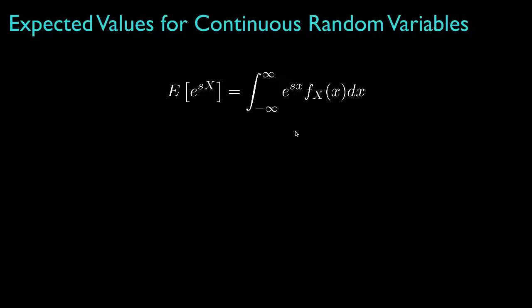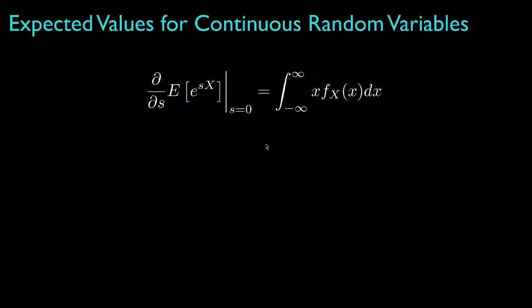To see this, let's differentiate both sides of this equation with respect to the parameter s. On the right-hand side, this differentiation brings x down into the integral. Then, if we look at these equations when s is set equal to zero, we see that the first derivative of the moment generating function evaluated at s equals zero is equal to the expected value, or the first moment, for the random variable.